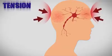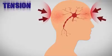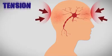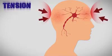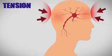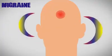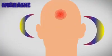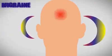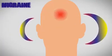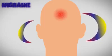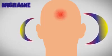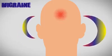Tension headaches are the most common and bring extreme pressure to your forehead or back of your head. Migraines are also very common, causing severe throbbing pain and sometimes causing foggy auras that make it hard for you to see.